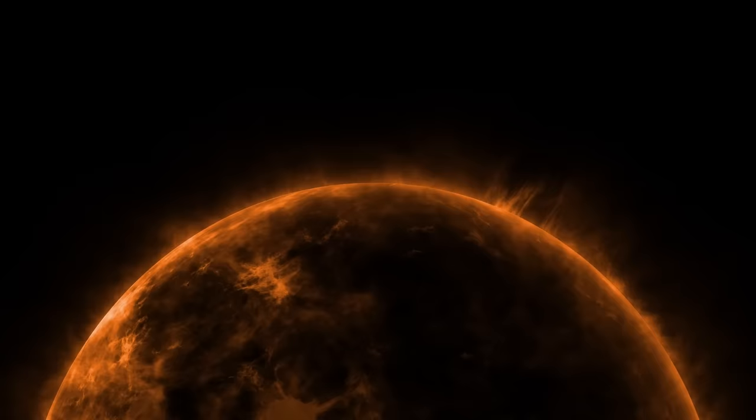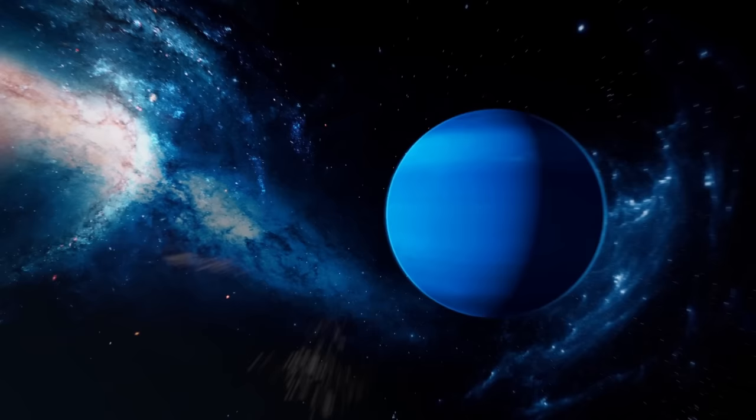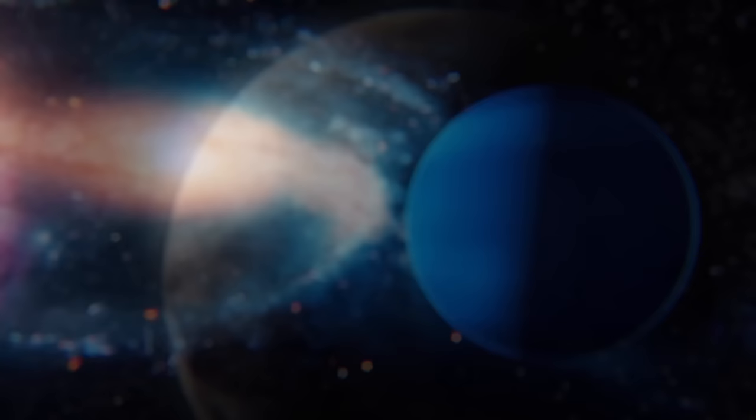If the Sun suddenly blinked out, Earth wouldn't slip into darkness for around 8 minutes. An observer on Uranus, which is almost 20 times farther away from the star than Earth, wouldn't notice for 2 hours and 40 minutes.